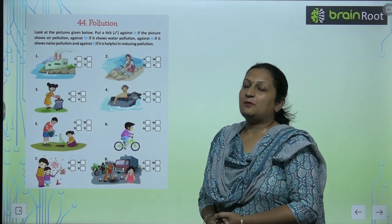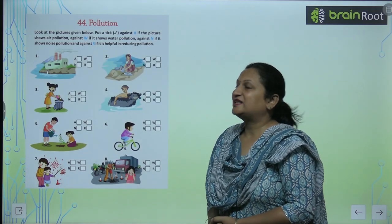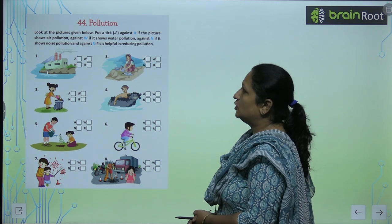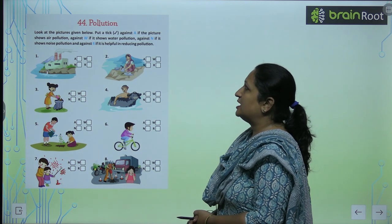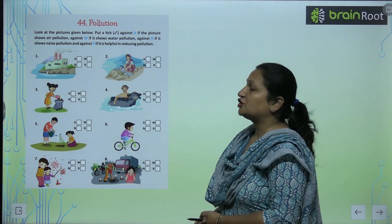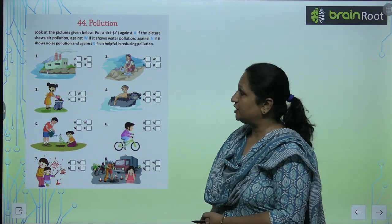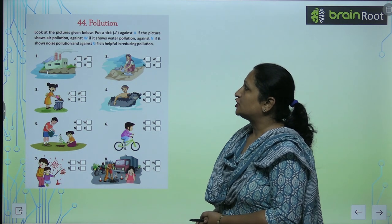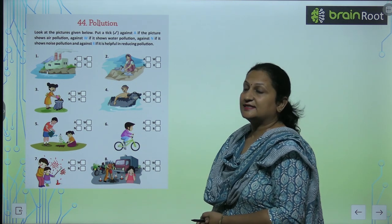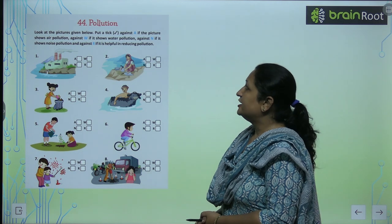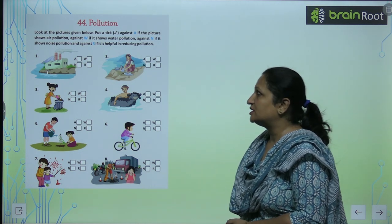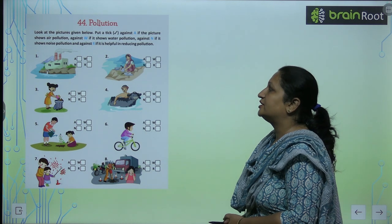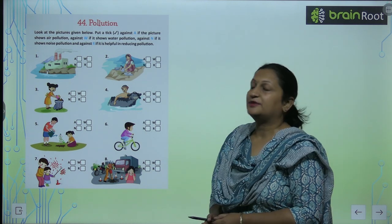Children, let's begin with chapter number 44, that is Pollution. Look at the picture given below. Put a tick mark against A if the picture shows air pollution, against W if it shows water pollution, against N if it shows noise pollution, and against R if it is helpful in reducing pollution.